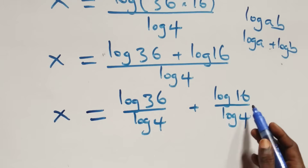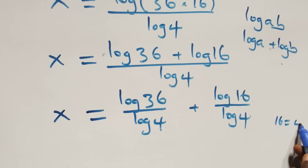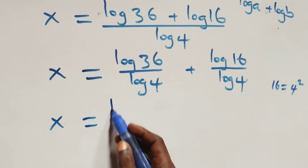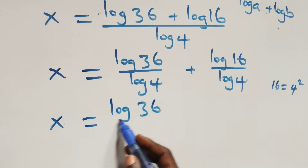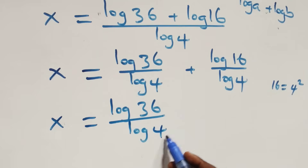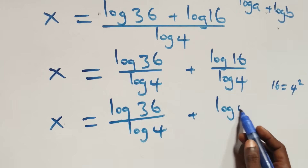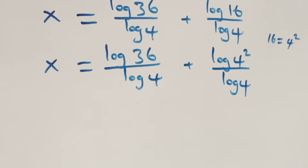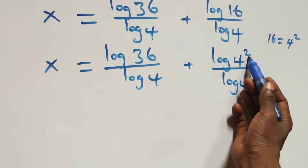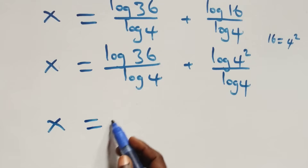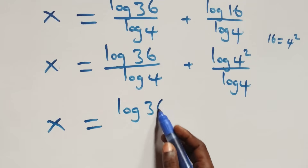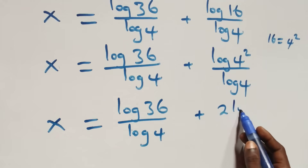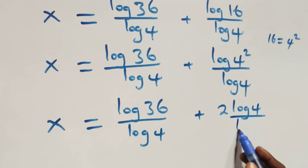Also here, we can write 16 as 4 times 4, which is 4 squared. So all we have here becomes x equals log 36 over log 4 plus log of 4 squared over log 4. Then we apply the power rule of logarithm, and this becomes x equals log 36 over log 4 plus 2 log 4 over log 4.